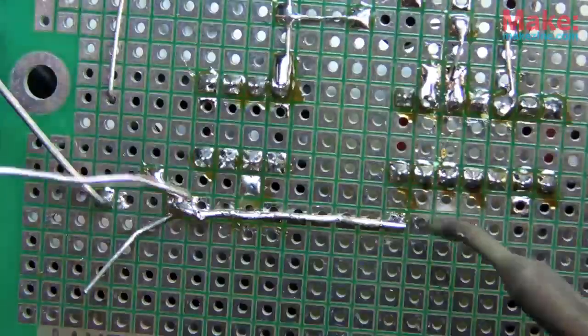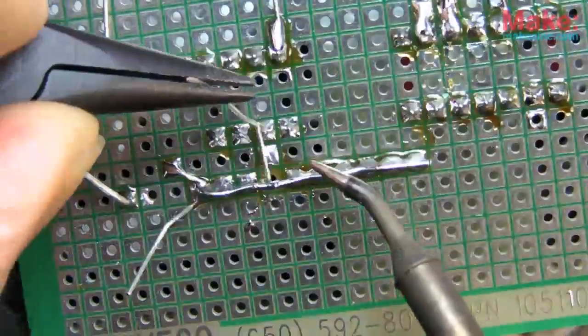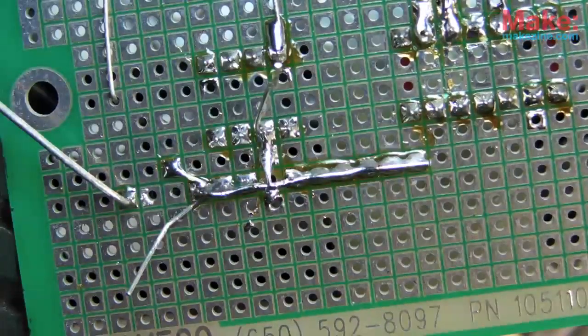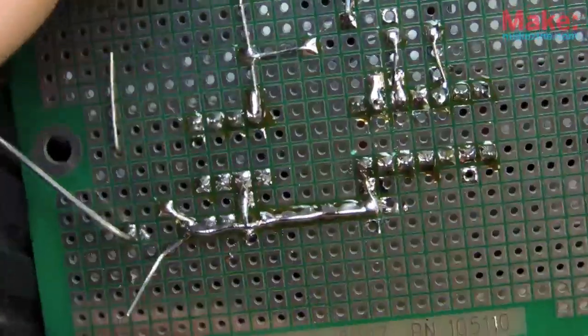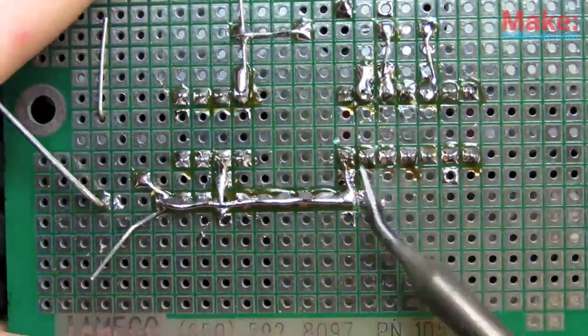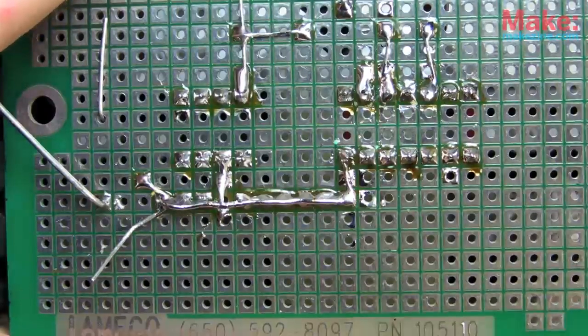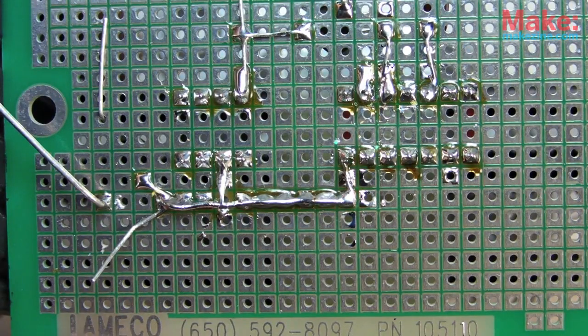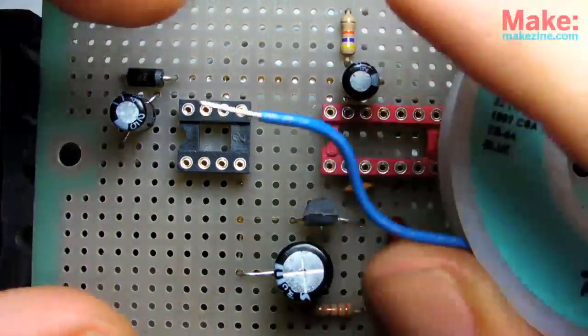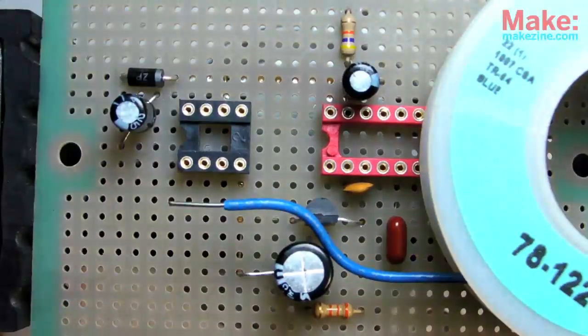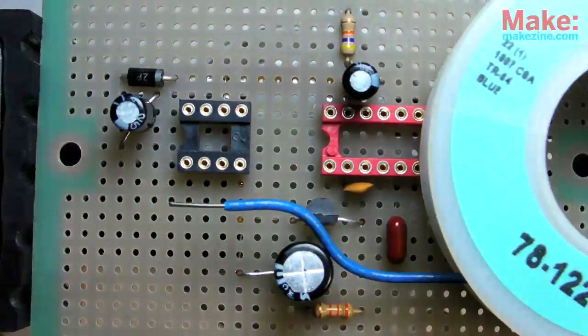The diode's thick cathode lead comes in handy for delivering power to both of my ICs. Small, unwanted bridges can usually be cleared by simply running the iron's tip between each pad. After a bit more work, I was able to make nearly all of the onboard connections using only the component leads I had on hand. For the remaining few, I'll use some solid core wire as jumpers on the top side of the board.